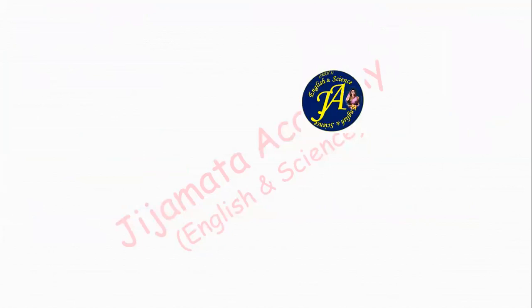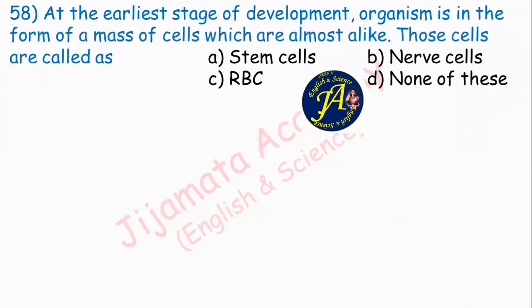At the earliest stage of development, an organism is in the form of a mass of cells which are almost alike. Those cells are called as dash — options are stem cells, nerve cells, RBCs, none of these. During early development, all cells are of the same type with no differentiation. Answer is option A: these are called stem cells.